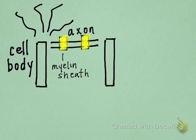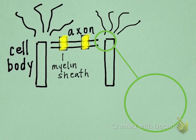Neurons engage in electrical communication as they send electrical signals across the axon. However, we have a big surprise at the end of the axon. The little green circle is showing that the axon is not physically connected to the second neuron. So how does the electrical signal reach the second neuron? This is where chemical transmission happens.